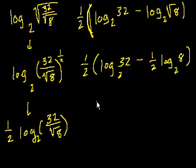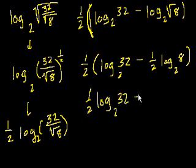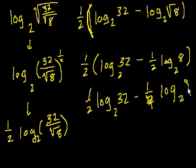And then if we want, we can distribute this original 1 half, and this equals 1 half log base 2 of 32 minus 1 fourth, because we have to distribute that 1 half, minus 1 fourth log base 2 of 8.